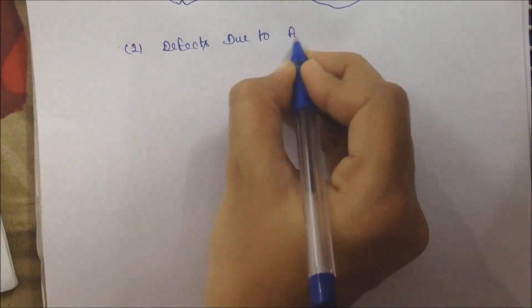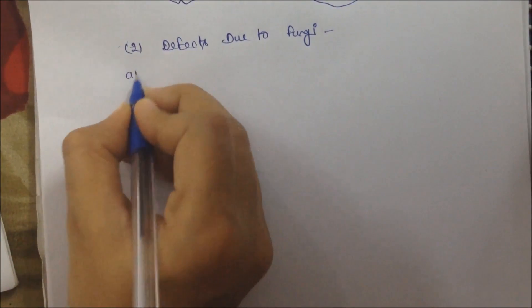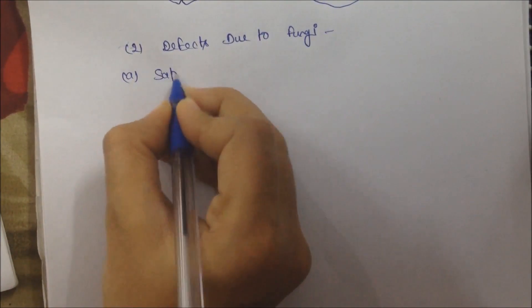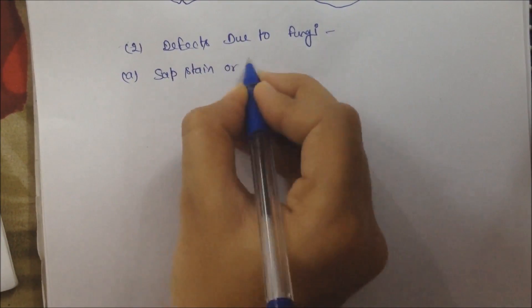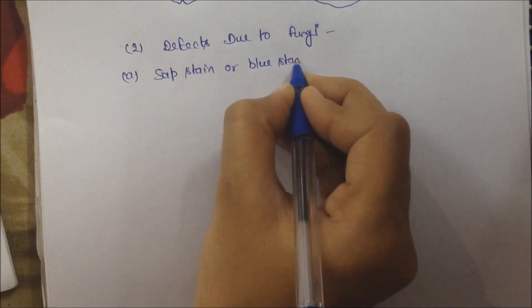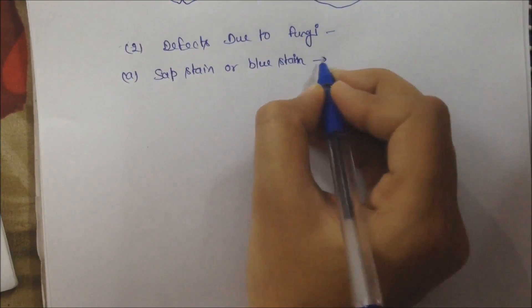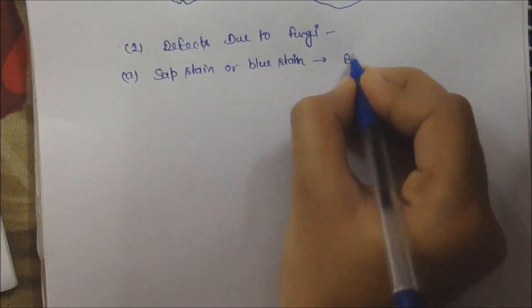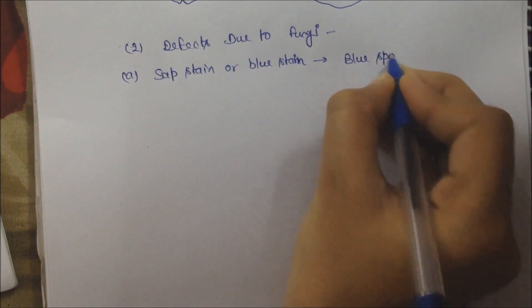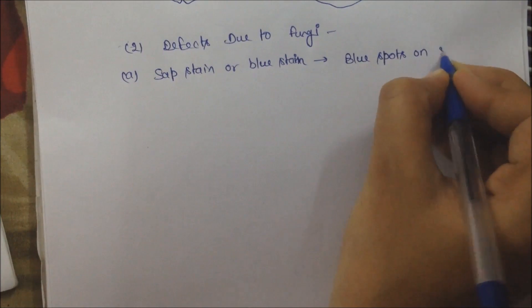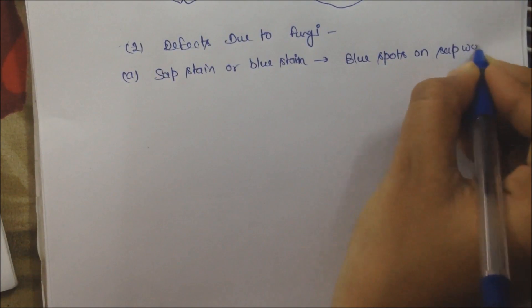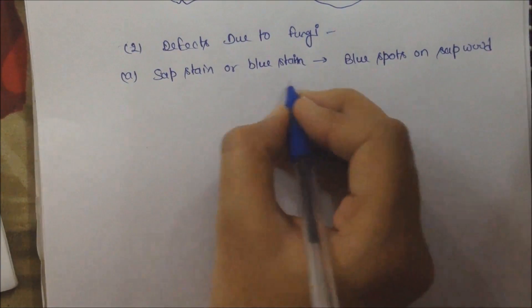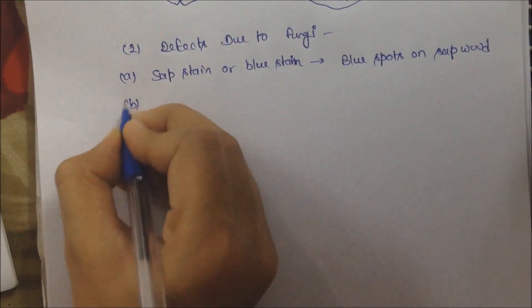Next is Defects Due to Fungi. First is Sap Stain or Blue Stain — in this way, timber is stained in wood, which is called Sap Stain or Blue Stain. Second is Brown Rot.